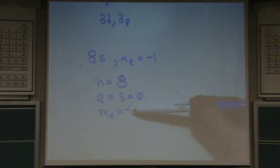In order to have an M sub L value of minus one, what must L be? One, or? No, what must L be? L could be one. What else could it be? Two, all the way up to infinity. Okay? You could have a minus one value.